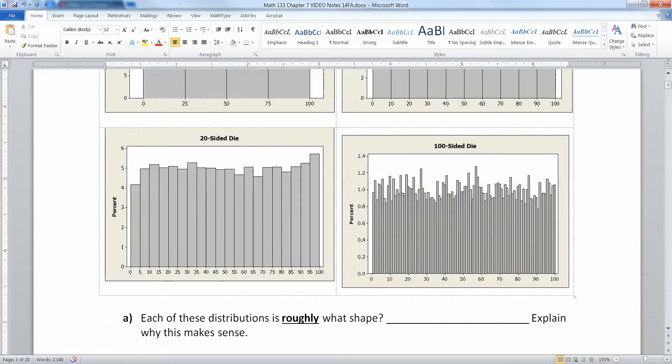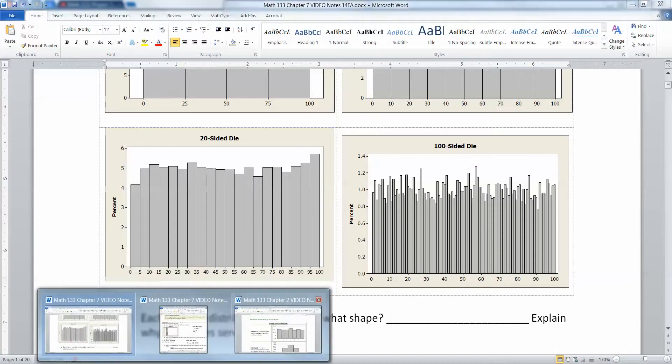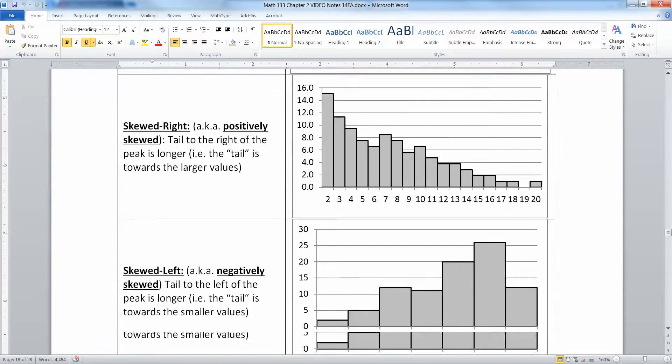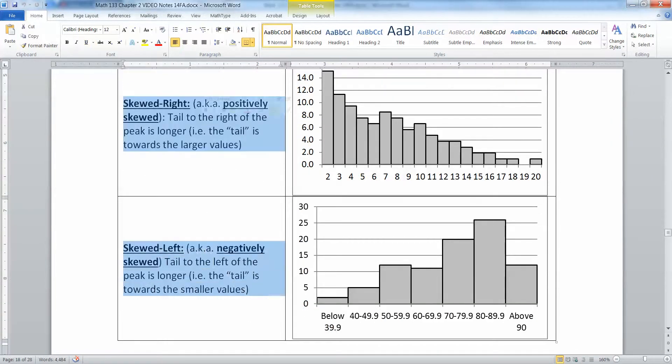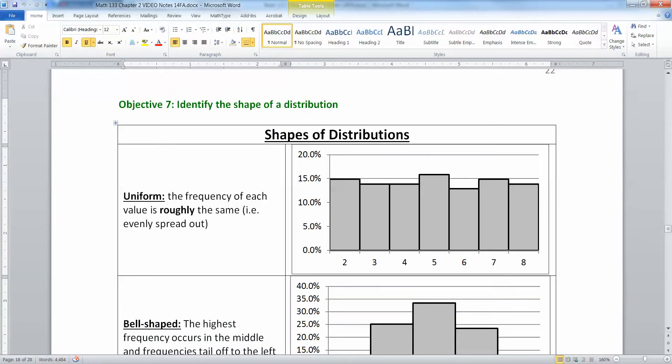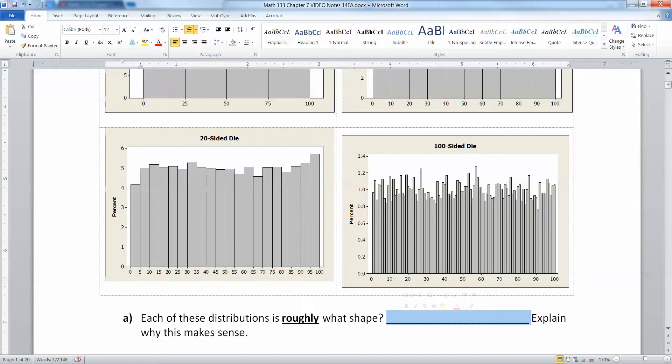Finally you get down here to the 100-sided die. What shape, roughly, do each of these graphs have? Well, it's been a while since we've seen this shape. We learned about skewed right and skewed left shapes, and the symmetric bell shape. There's another symmetric shape that we learned about in Chapter 2, which is the uniform shape, where everything is roughly the same. So this would be uniform.